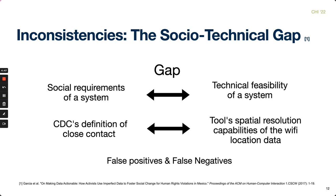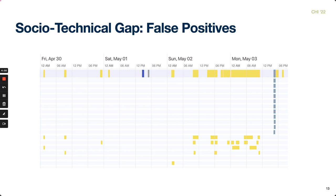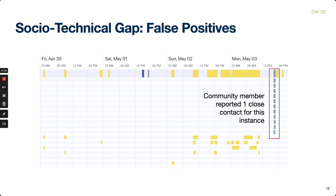False positives occurred when the tool displayed many more contacts in an instance than a community member reported. For example, on Monday May 3rd around 3 pm, the tool showed 11 co-locators in a miscellaneous location. The community member recalled being at the campus gym at this time but only reported one close contact, implying the tool was showing 10 false positive contacts. The contact tracer and community member discussed that the gym is a large area with many devices connected to Wi-Fi in the building, and due to this reasoning, the contact tracer only recorded one close contact for this instance.